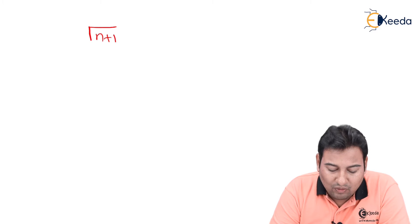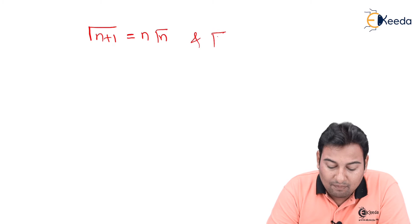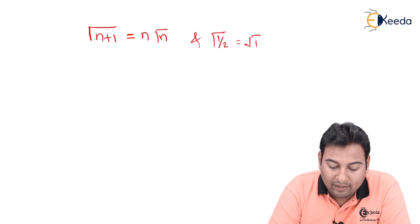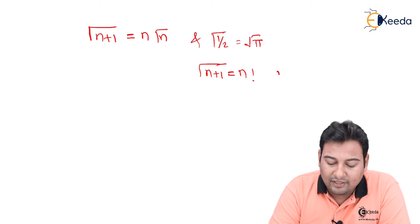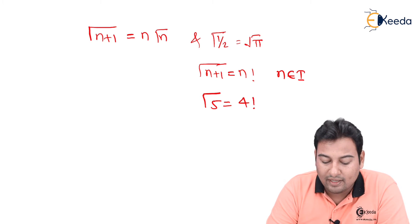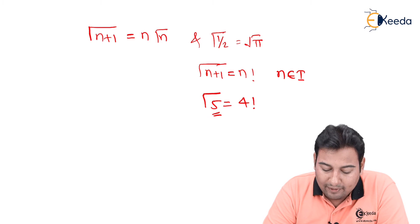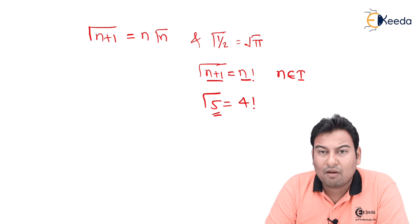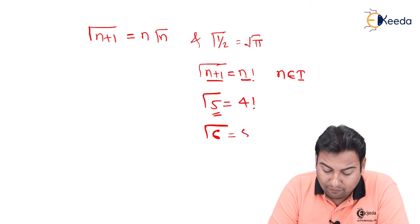Let's discuss one more concept — the gamma function — because it is required in Bessel's function. The formula is: Γ(n+1) = n·Γ(n). Also, Γ(1/2) = √π. If n is an integer, Γ(n+1) = n!. So for example, Γ(5) = 4!, and Γ(6) = 5!.